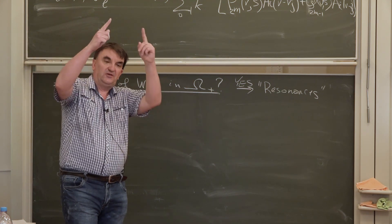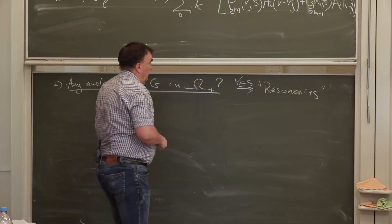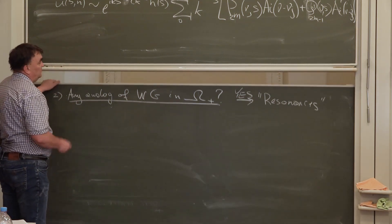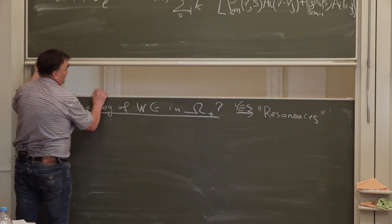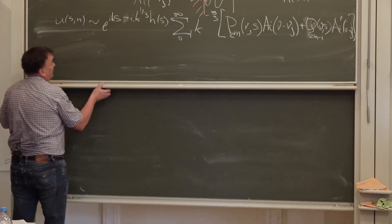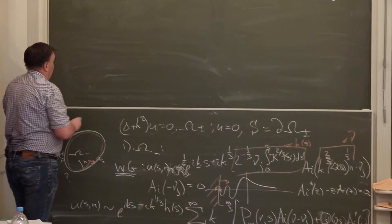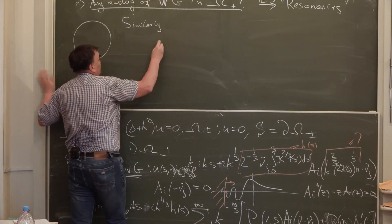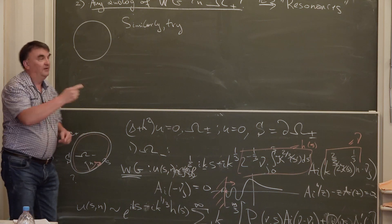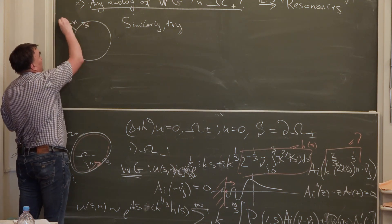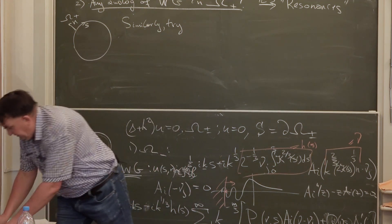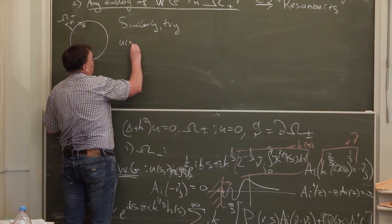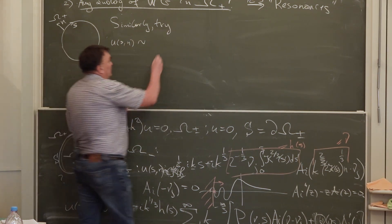It's a kind of absolutely continuous spectrum, and there is analytic continuation through this continuous part. There are poles of the analytic continuation called resonances. Now we live outside rather than inside — coordinates N and S in omega plus — and the sign of the curvature will have changed. But we will try a similar expansion as the approximation that led us to success inside.